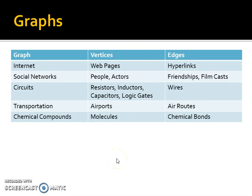There are lots of examples of graphs, but here it shows how these vertices and edges could be represented in different examples. Such as the internet, the vertices could be web pages and the edges could be hyperlinks. Social networks, it could be people or actors, and then the friendship links or the films they've been cast in, and so on.